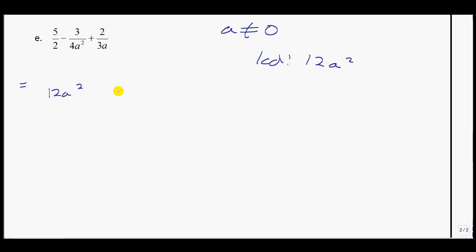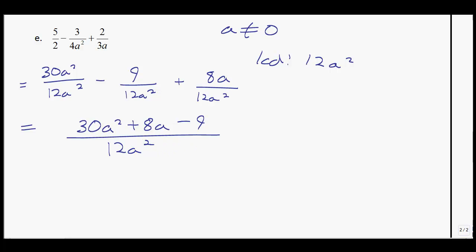So we're going to write each one of these as something over the 12A squared. What do you multiply the 2 by? You multiply it by 6A squared, so this gives you 30A squared. What do you multiply the 4A squared by? You multiply it by 3, so this gives you 9. What do you multiply the 3A by? You multiply it by 4A, giving you 8A. Now, gathering my like terms, well there aren't any to gather, but I will write them in descending order of power, so notice how I switch the order around, and write this all over the common denominator.